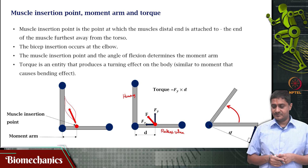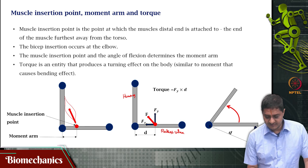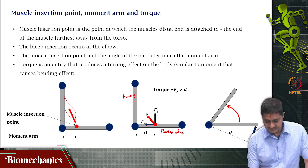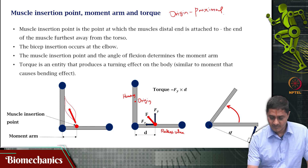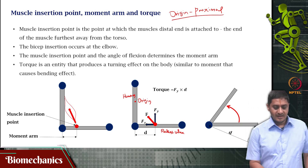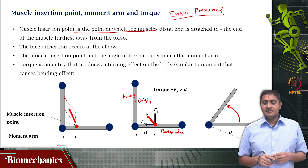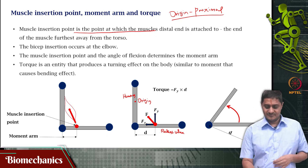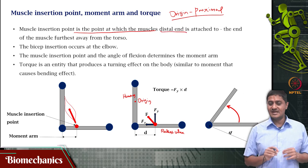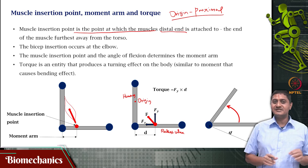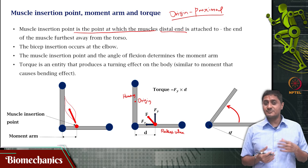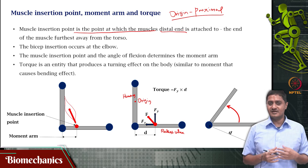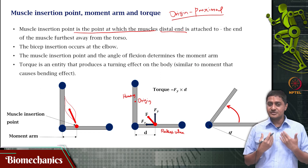The biceps attaches to the radius-ulna. The proximal point of attachment is called the origin — that is, the proximal attachment. The point at which the muscle attaches on the distal segment is called the insertion. So the fundamental naming convention is: the proximal attachment is always called origin and the distal attachment is always called insertion, measured from the torso.